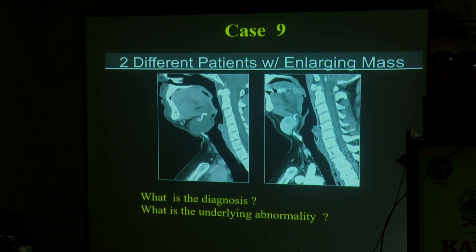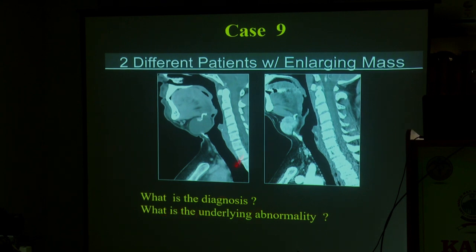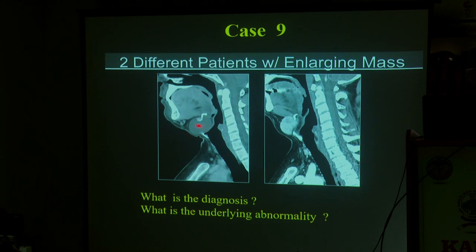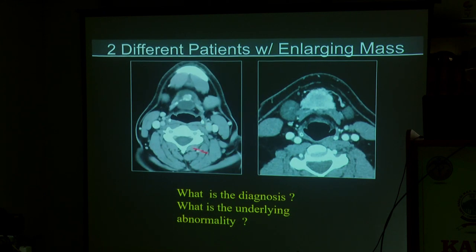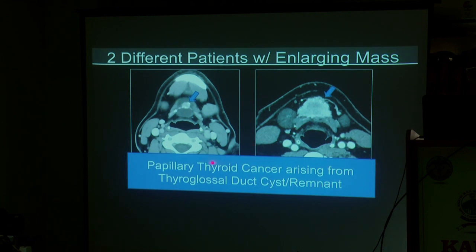Case number nine: two different patients. There is a lesion — what is the diagnosis? These two may be the same entity or different entities. What is the uniformity of this entity and what is the underlying abnormality? This is a midline enhancing lesion — purely cystic areas with some calcification. This is a thyroglossal cyst remnant. The rest — papillary thyroglossal carcinoma — will have intense enhancement. You have to be familiar with those features.